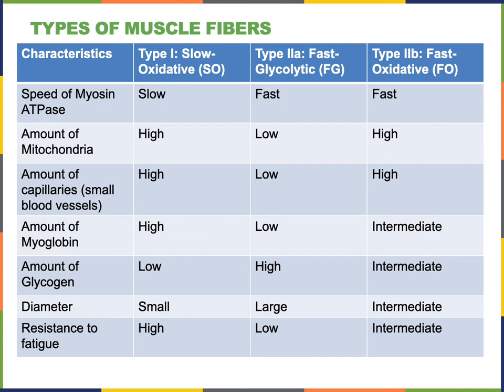In contrast, fast glycolytic fibers have a low amount of mitochondria, a low amount of capillaries, a low amount of myoglobin, and a high storage of glycogen. Fast glycolytic fibers are also relatively large, but they are relatively vulnerable to fatigue — they have a low resistance to fatigue. The fast glycolytic fibers can respond quickly and forcefully; however, they cannot sustain contraction for a long period of time and fatigue easily.